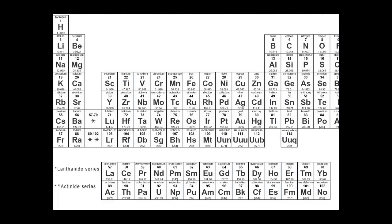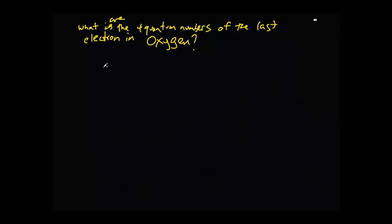Well, for that we need to look back at the periodic table and we see that oxygen, the first quantum number, is going to be two. It's in period two, energy level two. So n equals two.